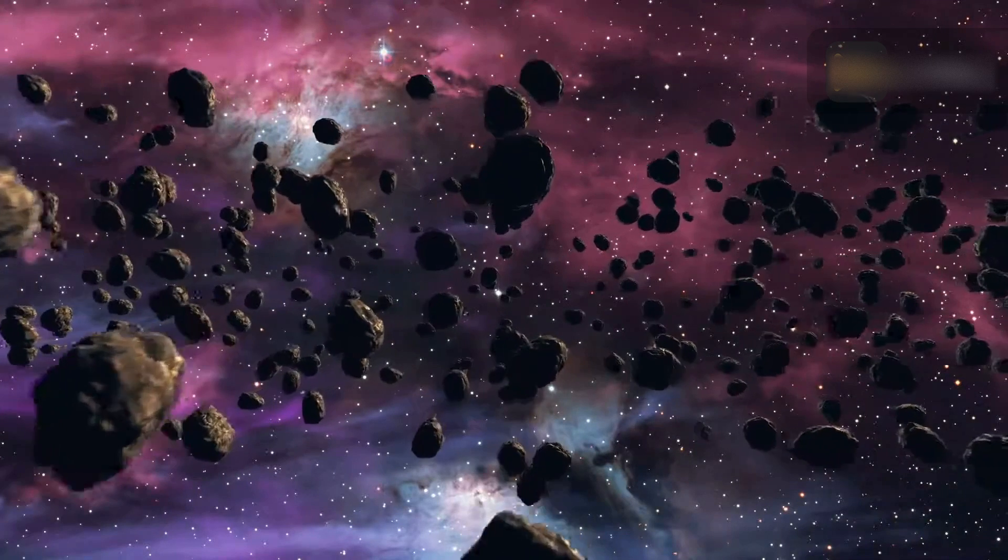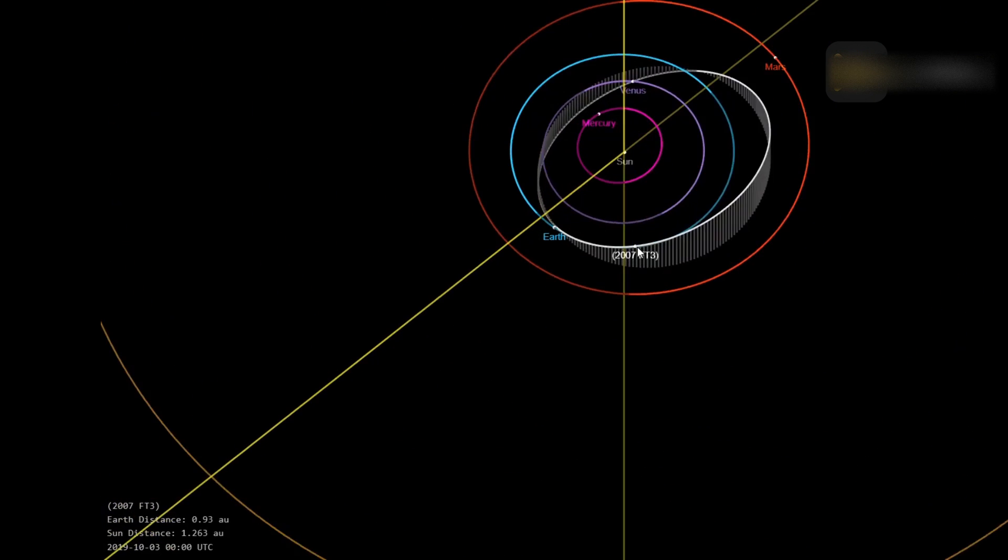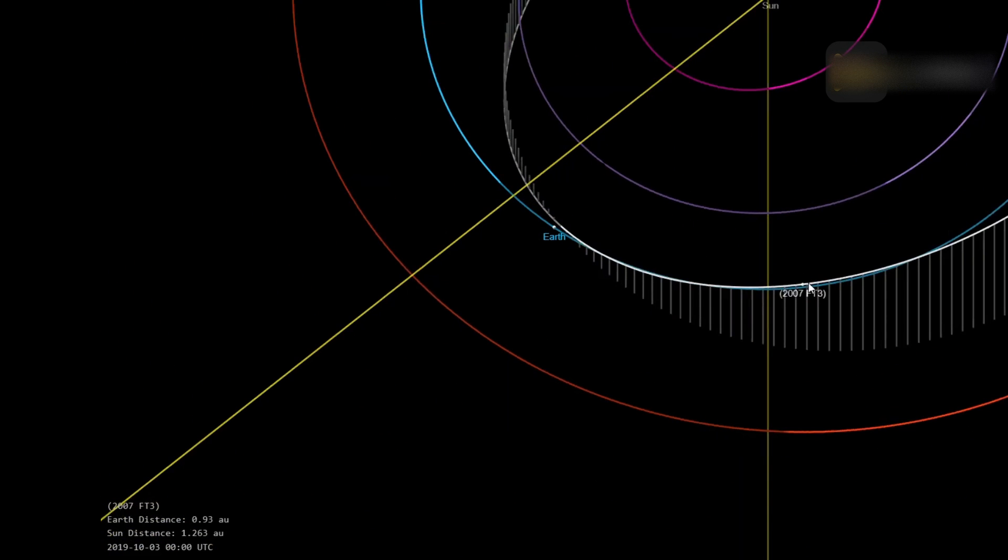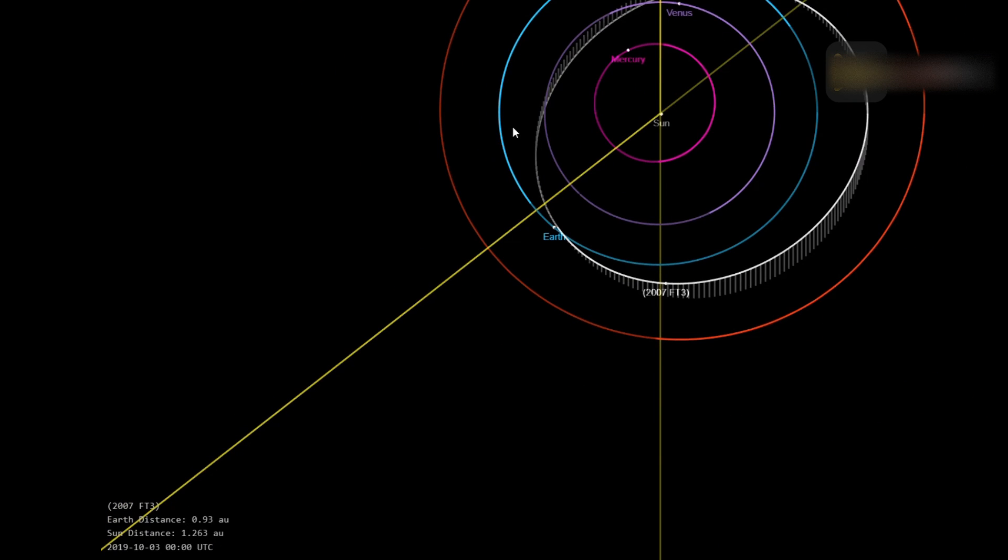Asteroid 2007 FT3 was discovered on March 20, 2007, from Mount Lemmon in Arizona. It was observed only briefly, just 14 times over 1.2 days, and then became too faint to observe, disappearing back into the depths of space.